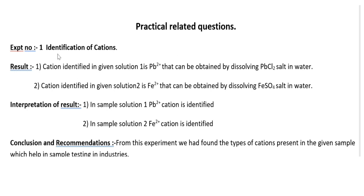Now let us see how to write practical-related questions. This is experiment number one: identification of cation. The result is: cation identified in given solution 1 is Pb²⁺, which can be obtained by dissolving PbCl₂ salt in water. The cation identified in given solution 2 is Fe²⁺, which can be obtained by dissolving FeSO₄ salt in water.